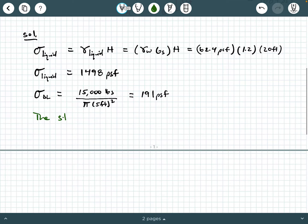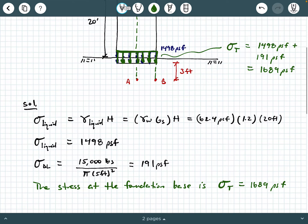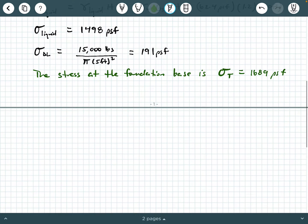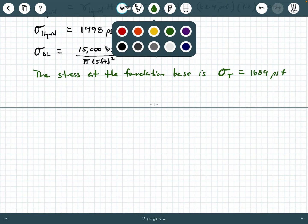So the stress at the foundation base is σ_total equals 1689 PSF. Now what we're interested in is what is the stress at these two points A and B, which are three feet below the base of the foundation, with point A being at the center line of the tank and point B being at the edge of the tank. Let's look at point A first.